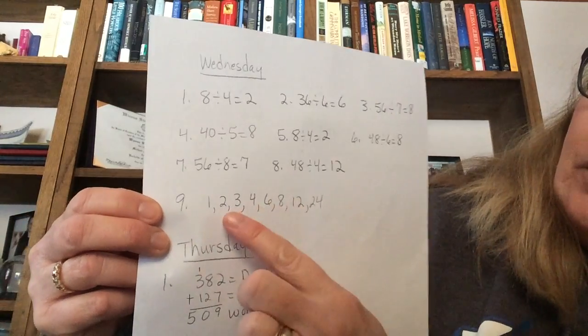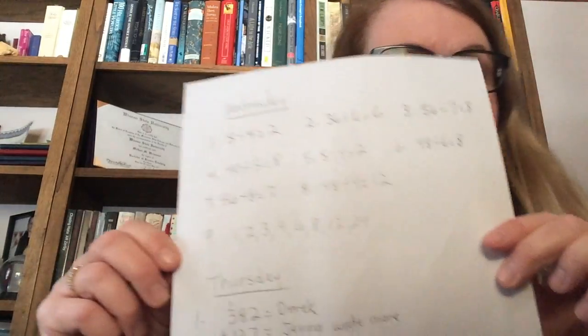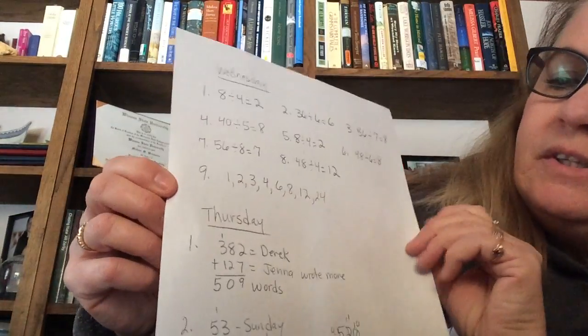So 1 times 24, 2 times 12 equals 24, 3 times 8, and 4 times 6. All of those have an answer of 24, so those are considered factors.